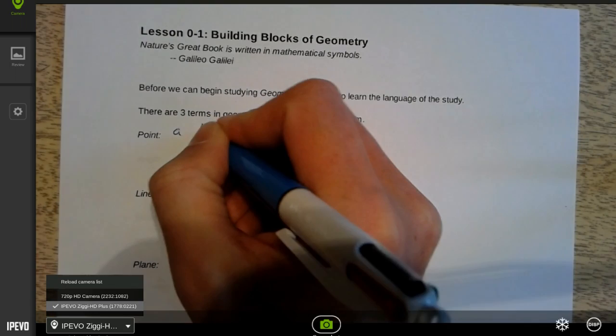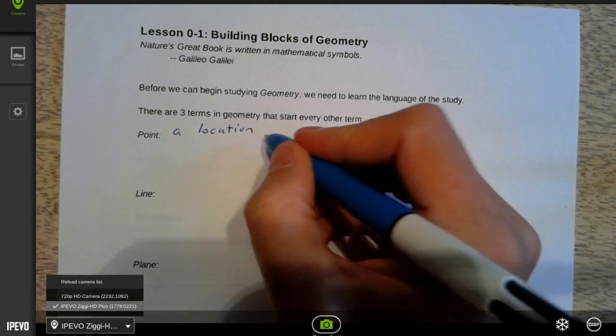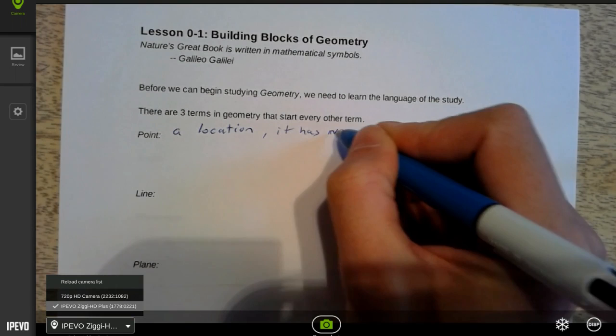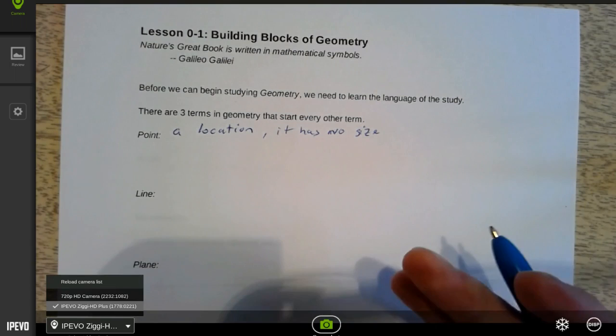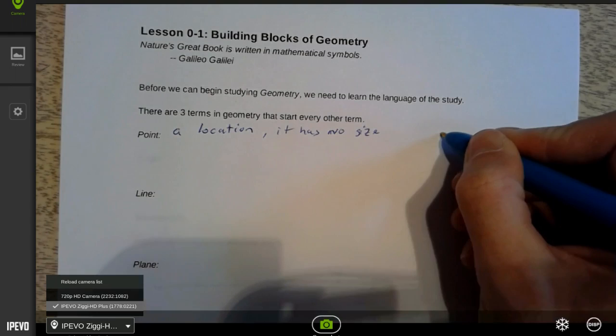A point is nothing more than a location. It tells me where something is. That's all it is. It has no size. We can't say one point is bigger than another point. They're all exactly the same thing.